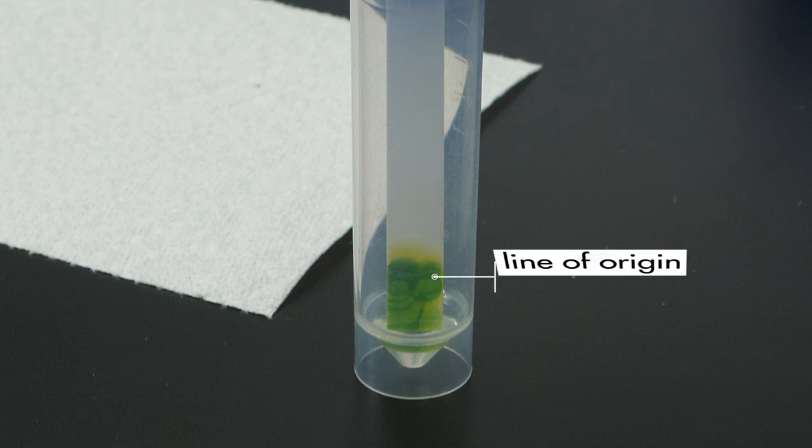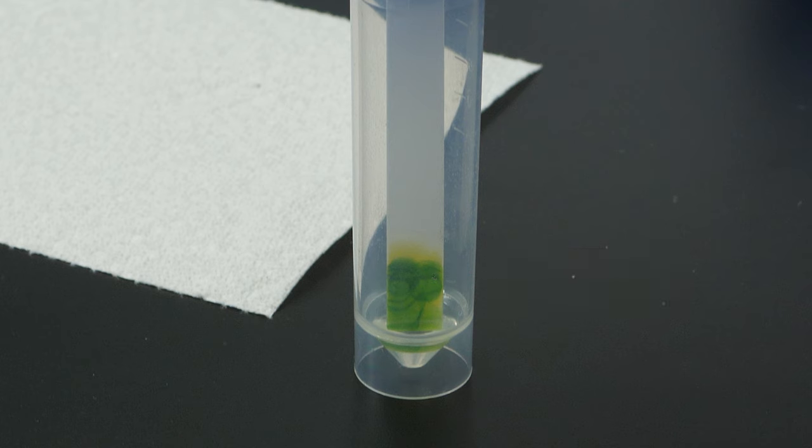As the solvent reaches the line of origin, it will dissolve the pigment and separate the mixture into some of its component pigments. Some pigments will travel quickly up the plate, but other pigments will travel more slowly.